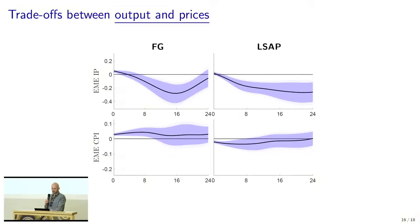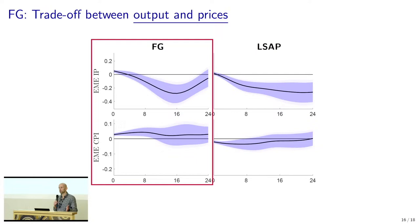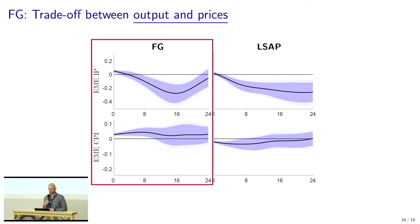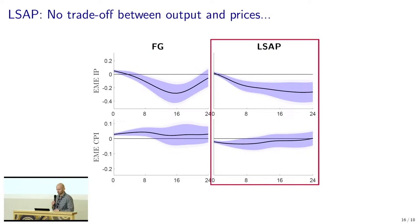Let's look at trade-offs between output and prices first. The first row shows the effect of forward guidance and LSAPs on emerging market IP, industrial production, and the second row on emerging market consumer prices. For forward guidance, we see that Fed policy drives output and prices in opposite directions — there is a contraction in emerging market real activity, but consumer prices actually go up, which could be rationalized by the role of imported goods in consumer baskets, by pervasive dollar invoicing in emerging markets, and the dollar appreciation happening in the background. So for forward guidance, there is this traditional macroeconomic trade-off between stabilizing output and prices.